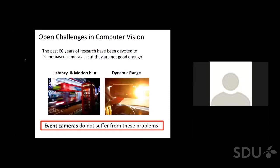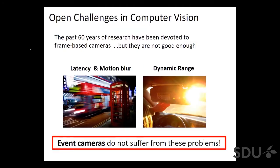Why event cameras? There are still open challenges in computer vision. If you look at the past 60 years of research, they have been using frame-based cameras all the time. However, I argue that frame-based cameras are not good enough — for three reasons. They have a very large latency, which depends on the exposure time of the camera. They suffer from motion blur, also depending on exposure time. And they have a very low dynamic range. You can have high dynamic range by taking pictures with different exposure times, but then you unfortunately increase the latency of the system.